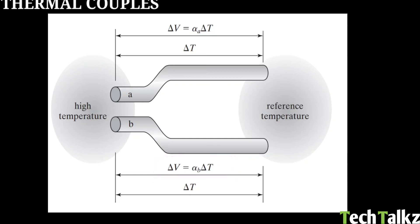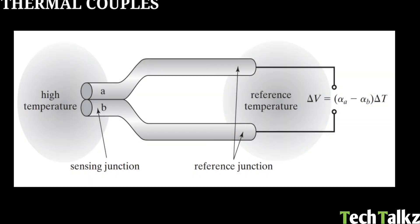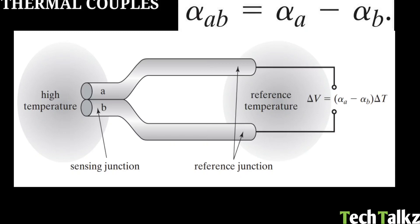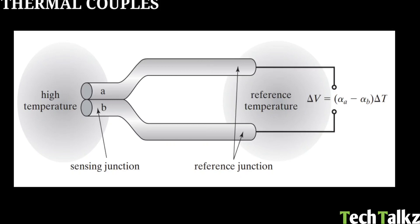The Seebeck coefficient is delta V upon delta T. When you join these two different materials together, the Seebeck coefficient will become alpha AB, that is alpha A minus alpha B. In this joint junction, there is high temperature at one end, and the open ends are at reference temperature. At the reference point, the delta V open loop voltage will be alpha A minus alpha B multiplied with delta T.